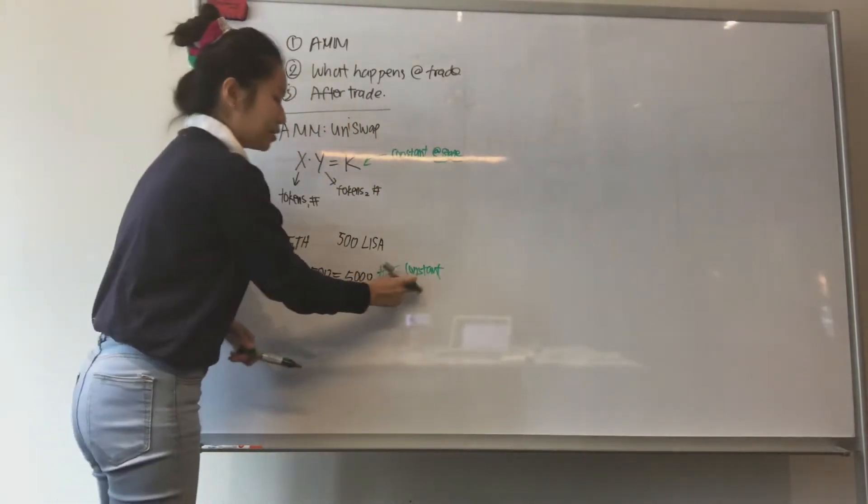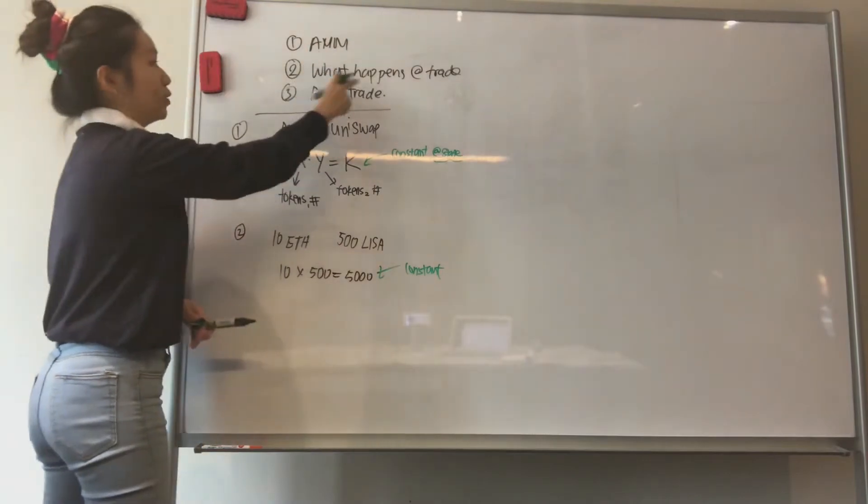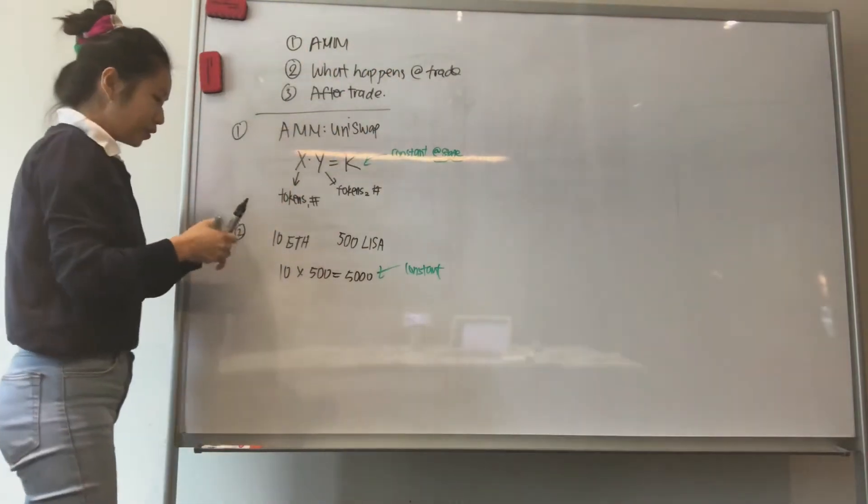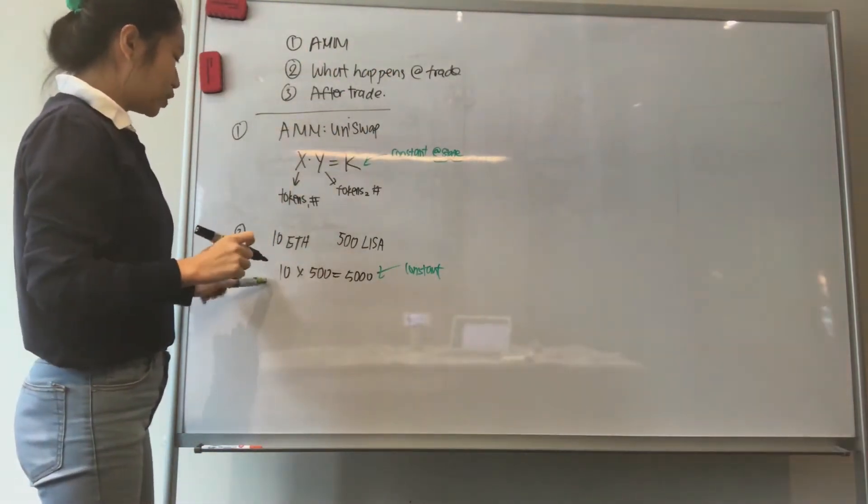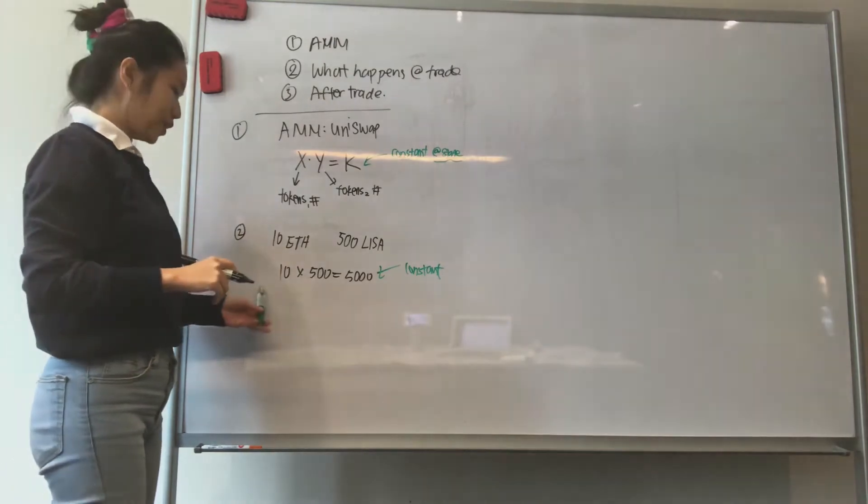This value is very important because it is the value that governs what happens at trade. What are we going to do now? So this is the state that we are in.